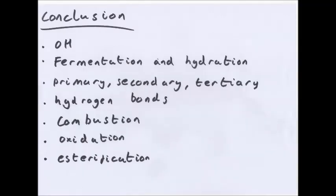So conclusion. OH group is an alcohol. Ethanol can be created by fermentation and hydration. You can have primary, secondary and tertiary alcohols. Alcohols form hydrogen bonds and they can undergo combustion, oxidation and esterification. So thanks for listening. Any questions asked, please comment, like, subscribe and yeah, thanks for watching. Goodbye.